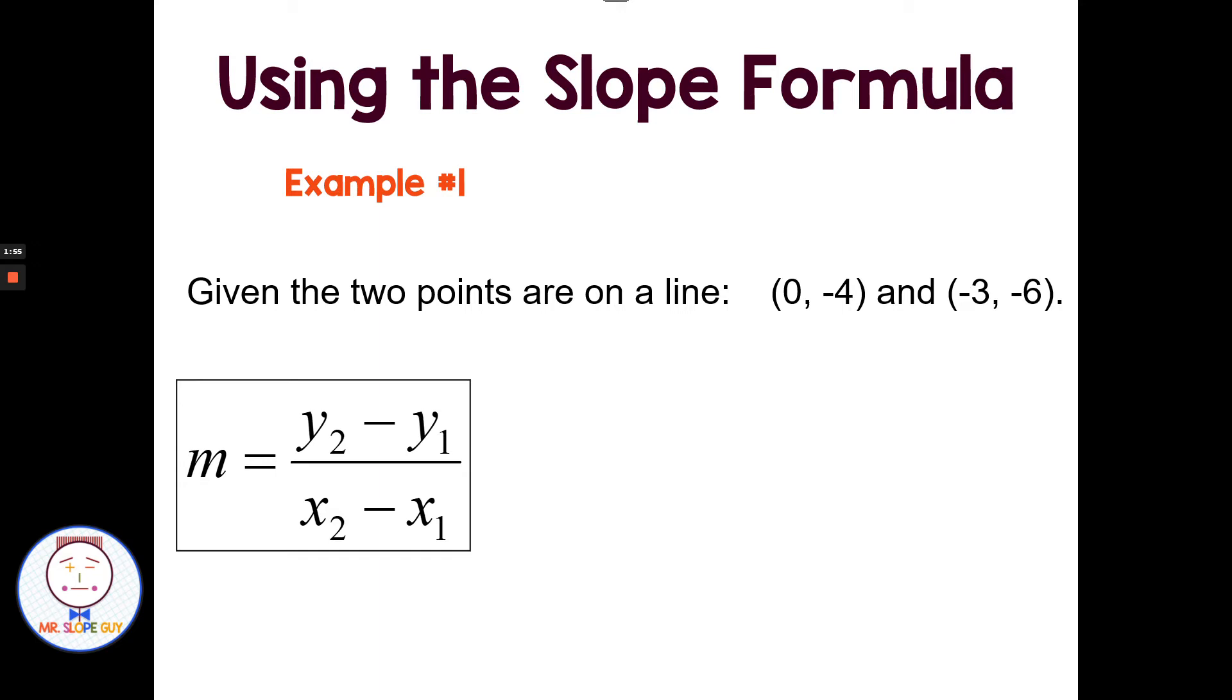So if we're given two points, like (0, -4) and (-3, -6), we can substitute in these values into our formula by first wanting to identify a first point and a second point. These are interchangeable as long as you're consistent and keep your x's and y's together. I'm going to label whatever point I come to first as the x sub 1 and the y sub 1, and whatever point I come to second, I will label as x sub 2 and y sub 2. Then I just want to substitute those into the slope formula.